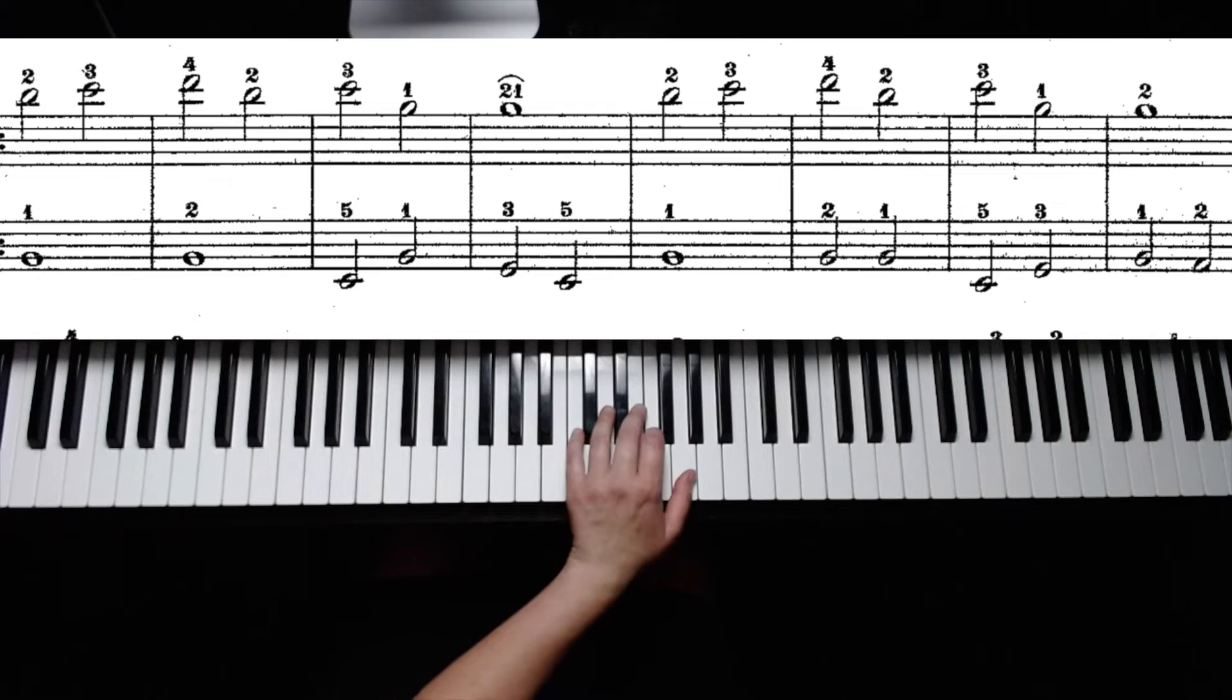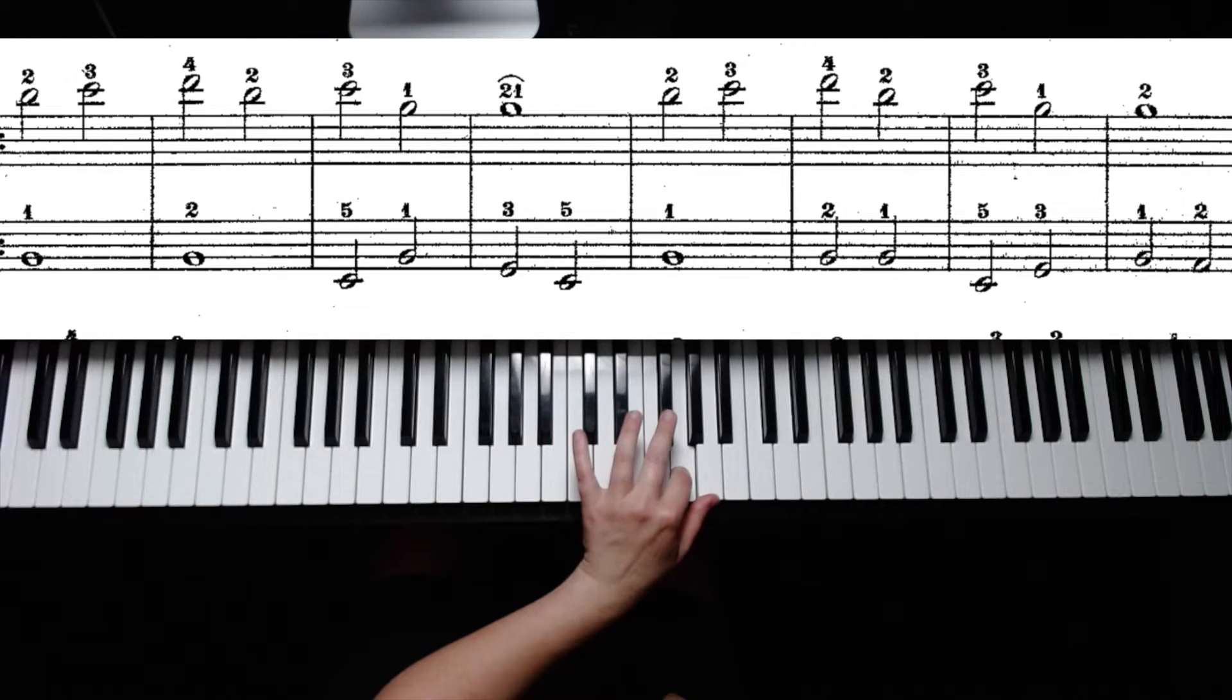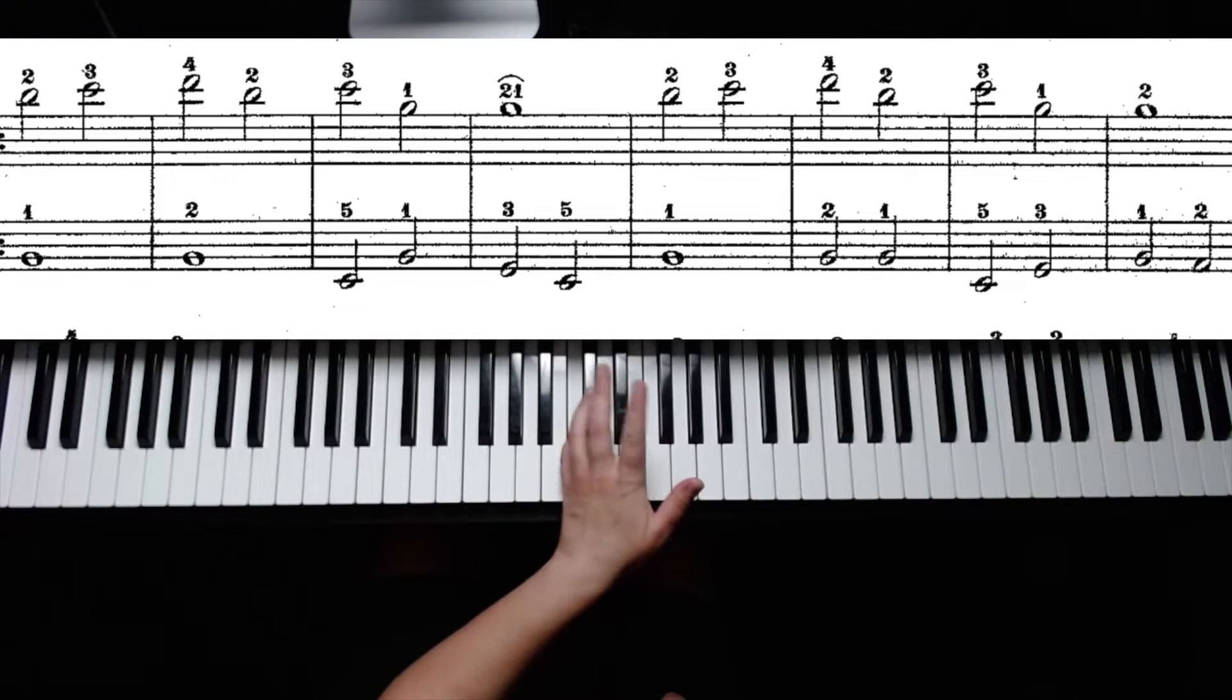Here's the left hand that goes with that third line. We start with the whole note G with our thumb, the next measure is G with our second finger, back down to C with our fifth finger.